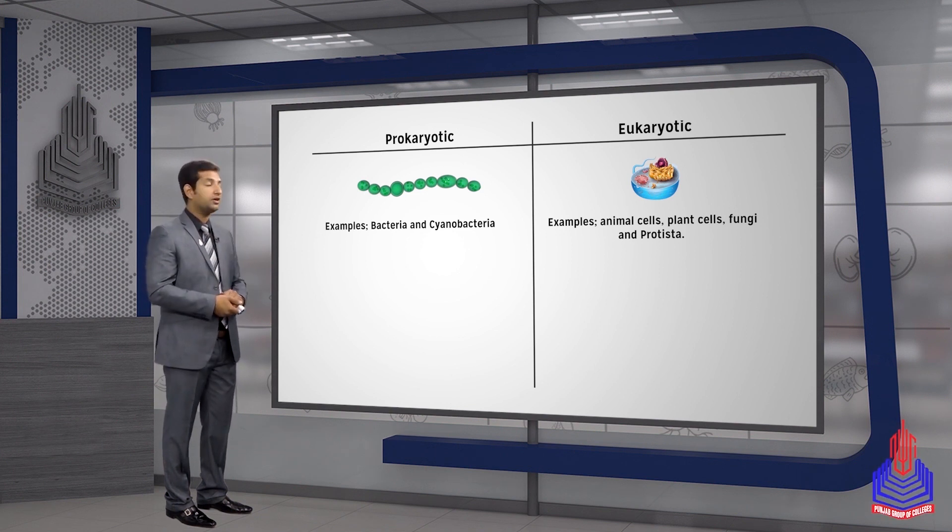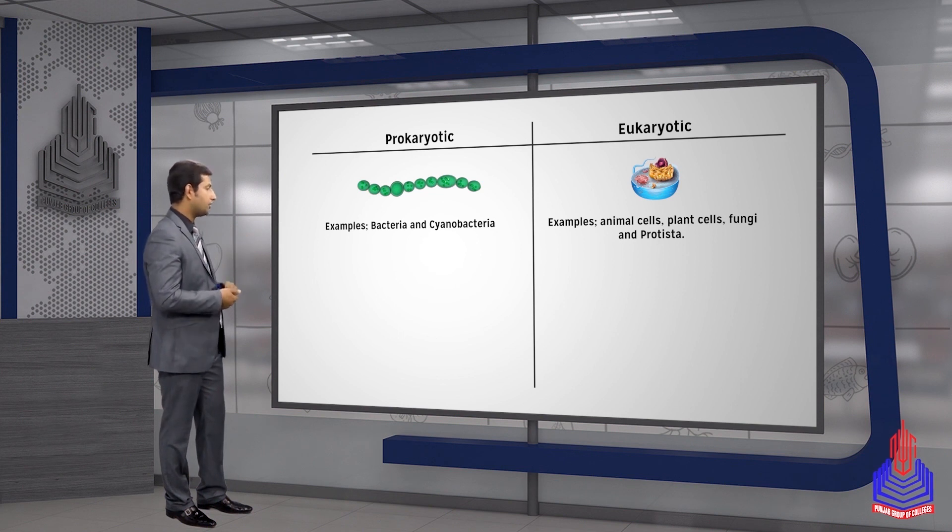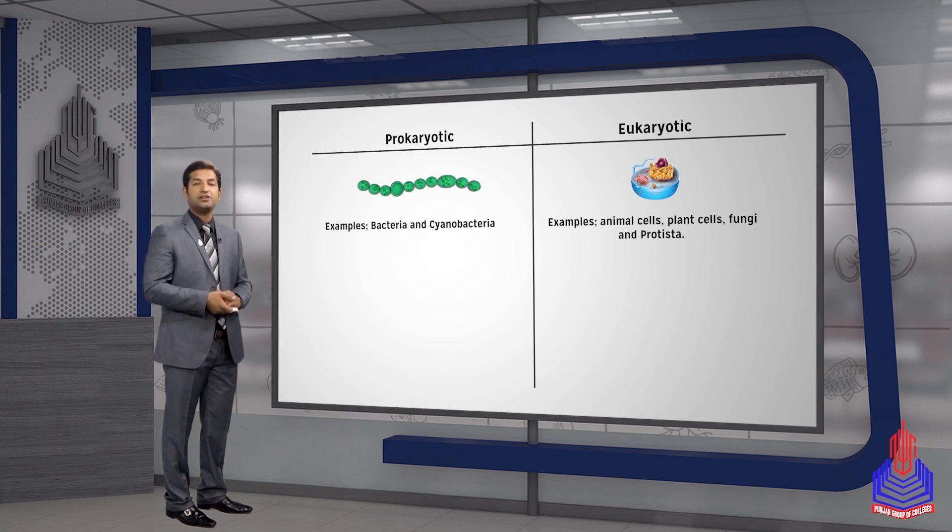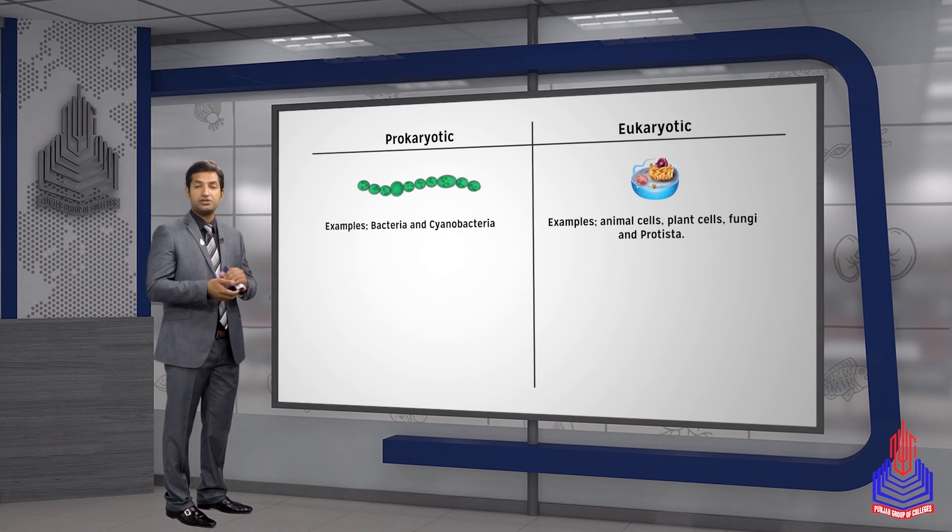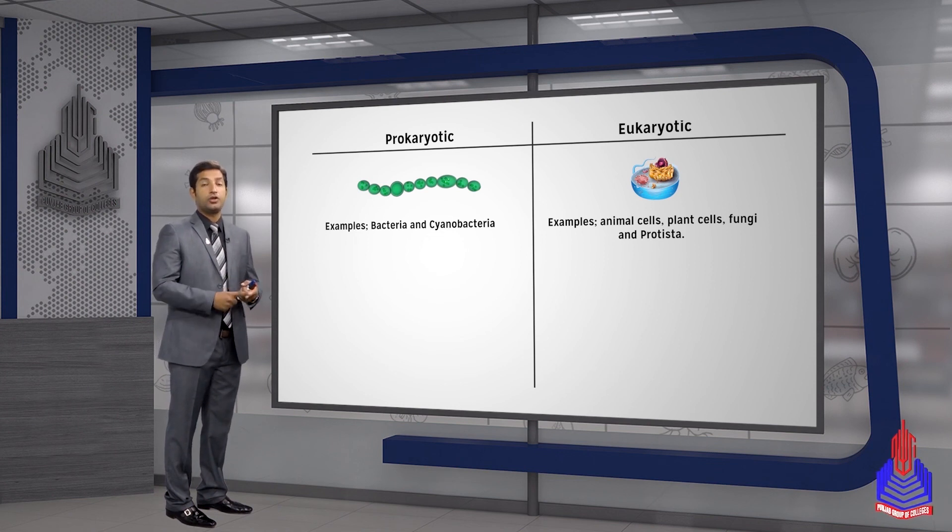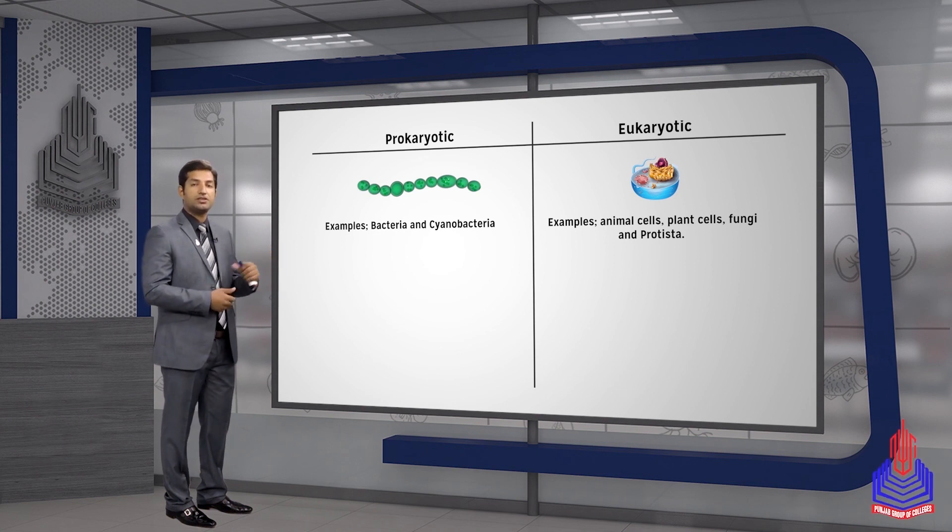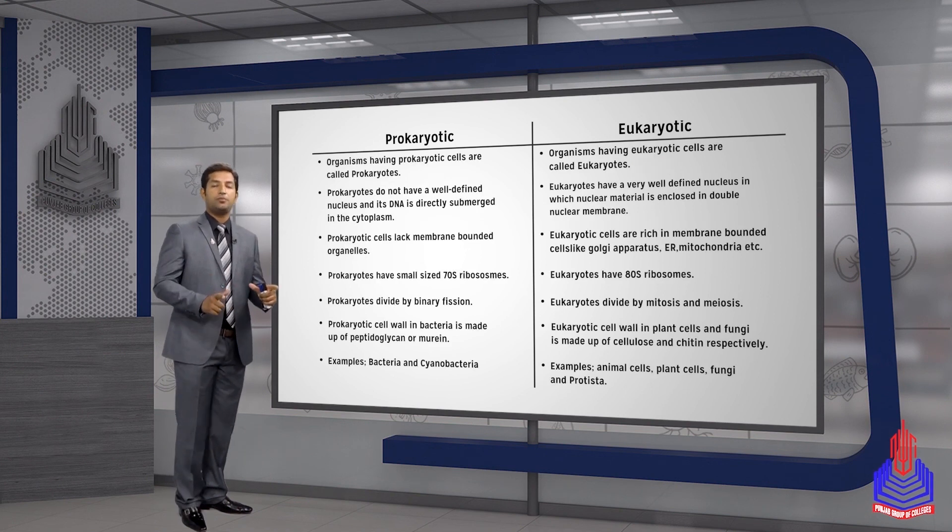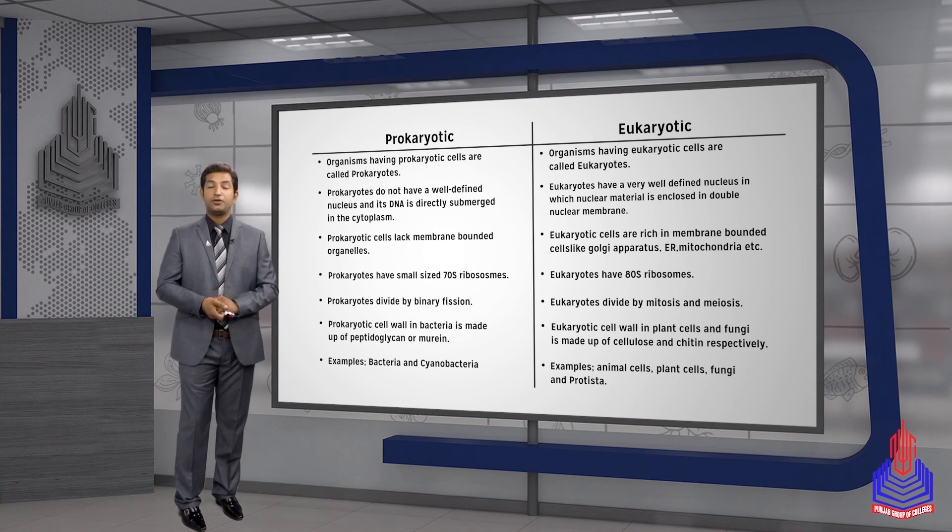In terms of size, the prokaryotic cells are smaller than the eukaryotic cells. Our cells, for example animal cells or plant cells, in terms of size can be much larger than bacteria. As examples, in the eukaryotes we can include the animal cells, plant cells, fungal cells, and protists like amoeba and paramecium. While on the other side, in prokaryotic cells we can include bacteria and cyanobacteria, also known as blue-green algae. So these are some basic points completing here. Next session, we'll cover another topic. Allah Hafiz.